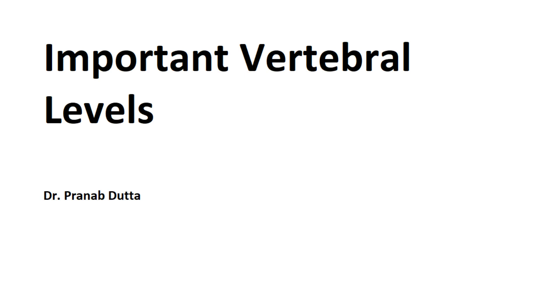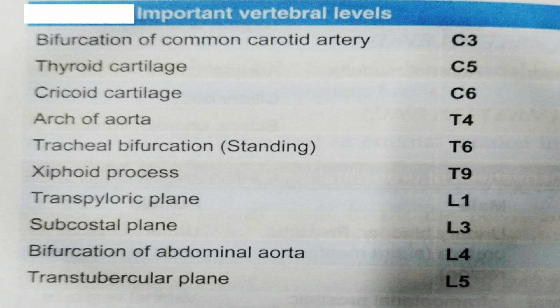Hello everyone, today in this video we are going to talk about important vertebral landmarks — a few important vertebral landmarks that are quite frequently asked in different exams. So, important vertebral labels in anatomy. The first one is bifurcation of the common carotid artery at the level of cervical vertebra C3.